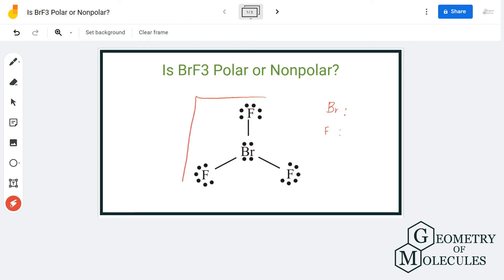So here is the Lewis structure. Each fluorine atom shares one electron of bromine to complete its octet, which results in two non-bonding pairs of electrons on the bromine atom.